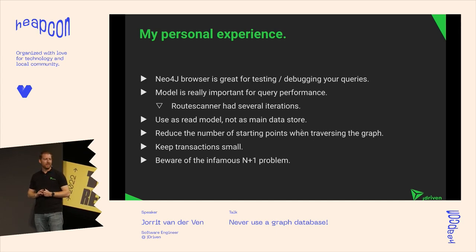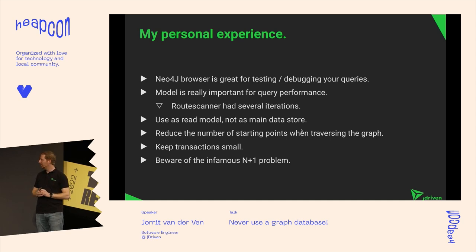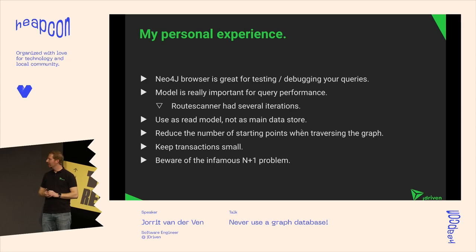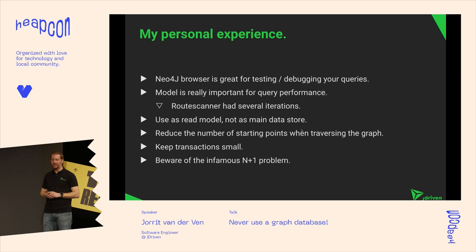We noticed that when we wanted to update the database in one transaction — thinking we'd either get a new dataset or keep the old one — and we tried to update like a million nodes, we just got out-of-memory errors on both the server and client side and everything crashed. So if you're going to use transactions in a graph database, especially Neo4j, try to keep those transactions small to prevent any strange errors.